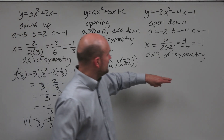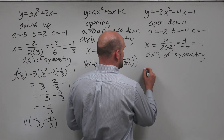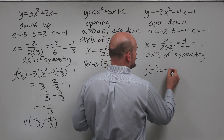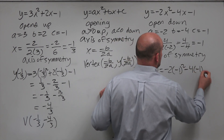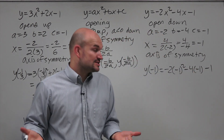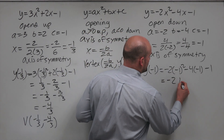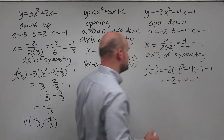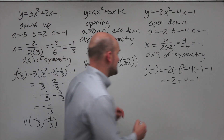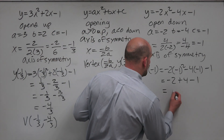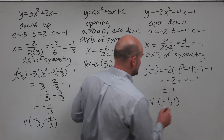For the second example, the x-coordinate is negative 1. Plugging in: negative 2 times negative 1 squared minus 4 times negative 1 minus 1. Negative 1 squared is positive 1, so that's negative 2 plus 4 minus 1. Negative 2 plus 4 is positive 2, minus 1 equals positive 1. So the vertex is (negative 1, positive 1).